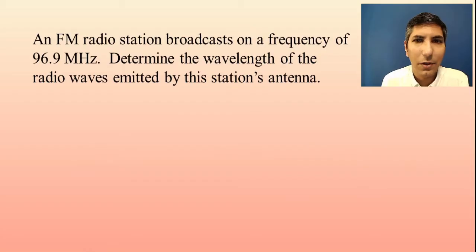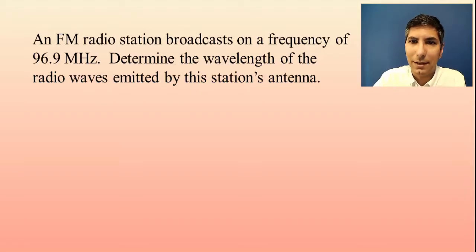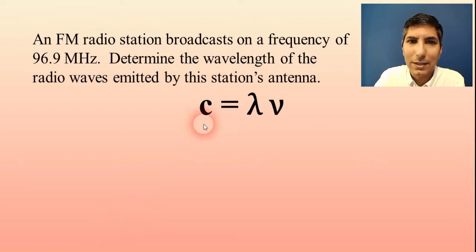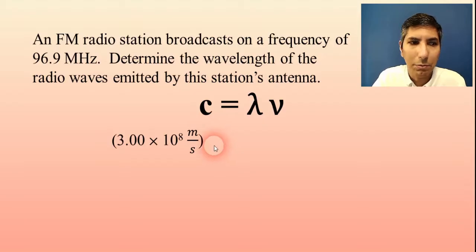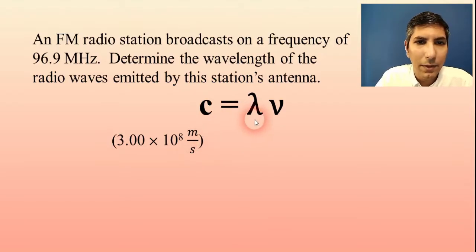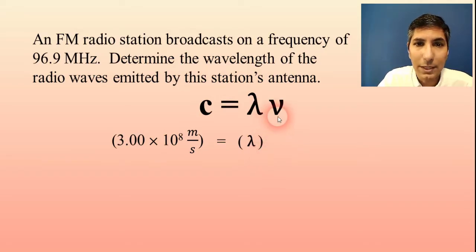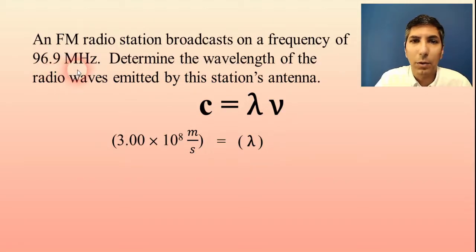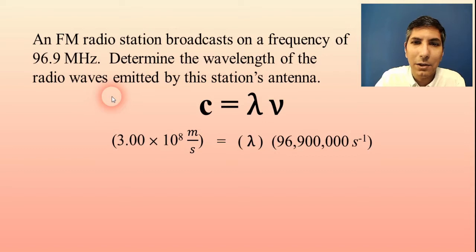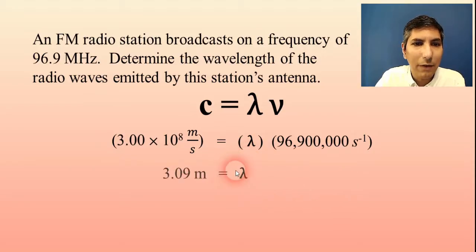Let's imagine that we have an FM radio station that broadcasts on a frequency of 96.9 megahertz. Determine the wavelength of the radio waves emitted by this station's antenna. We're using the equation c equals lambda times nu and just going to plug and chug. C is the speed of light: 3.00 times 10 to the eighth meters per second. The wavelength — lambda — is what we're solving for. The frequency — nu — is 96.9 megahertz. But notice we have to write it in hertz, not megahertz. Mega means a million, so it's 96,900,000 hertz. When we plug these into our equation, we find that the wavelength is about 3.09 meters.